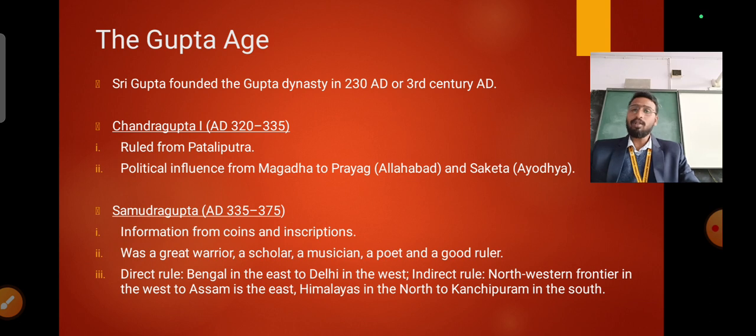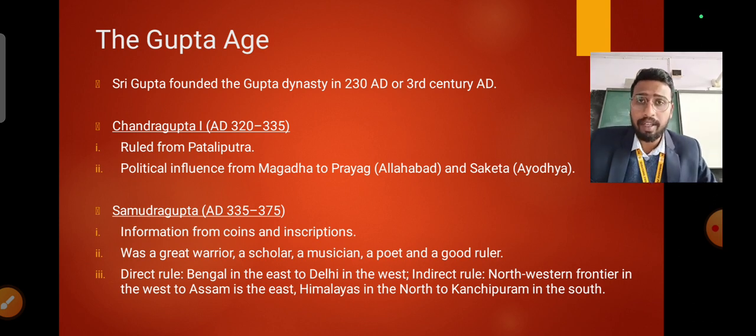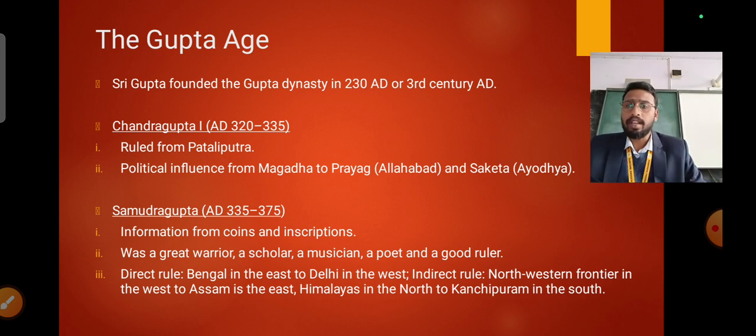That means though his empire was only from Bengal to Delhi, which is the direct rule that we can say, but his indirect influence, he could control areas which were beyond his empire, which never came under his jurisdiction but still he had indirect rule over there as well.